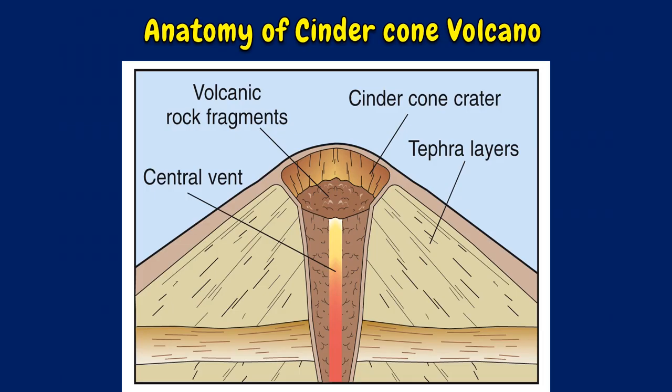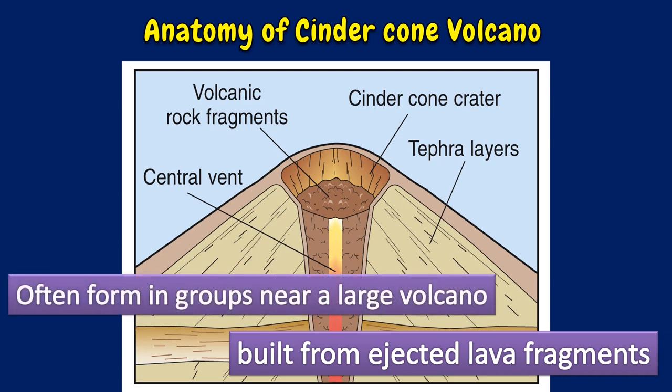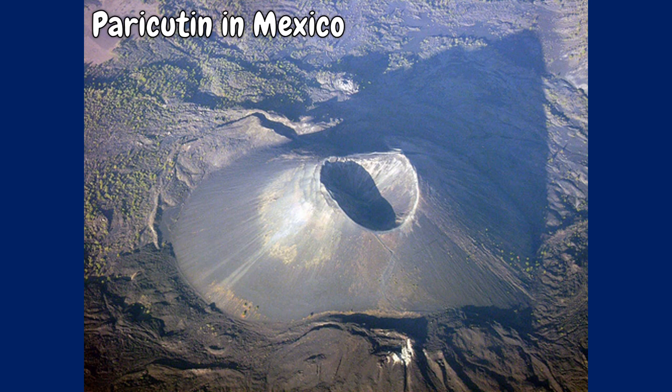Cinder cone volcanoes are the simplest type of volcano. They occur when particles and blobs of lava are ejected from a volcanic vent. The lava is blown violently into the air and the pieces rain down around the vent. Over time, this builds up a circular or oval-shaped cone with a bowl-shaped crater at the top. Cinder cone volcanoes rarely grow larger than about 1,000 feet above their surroundings.